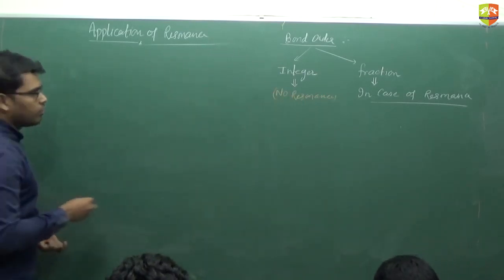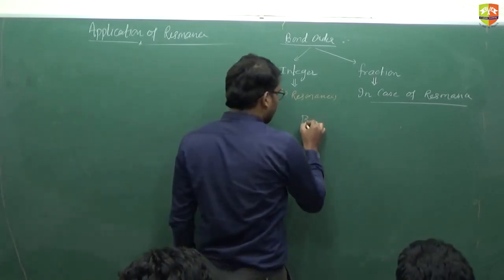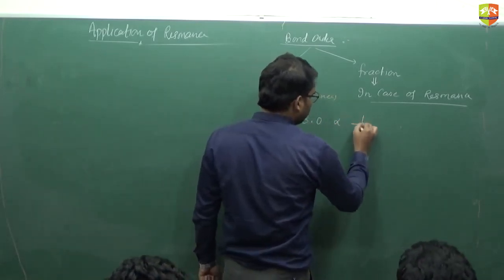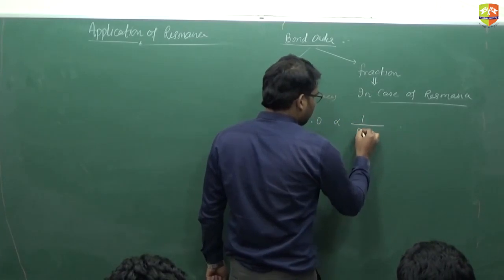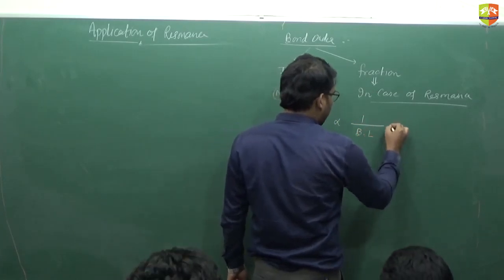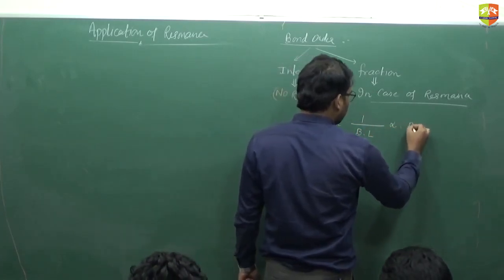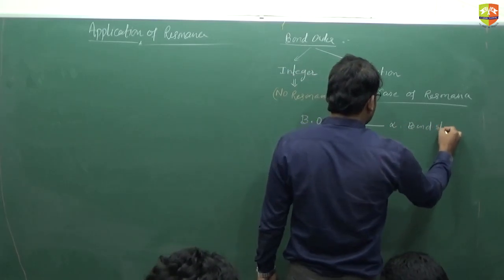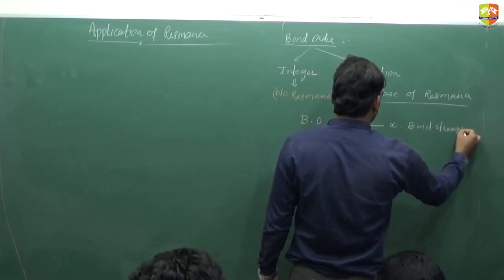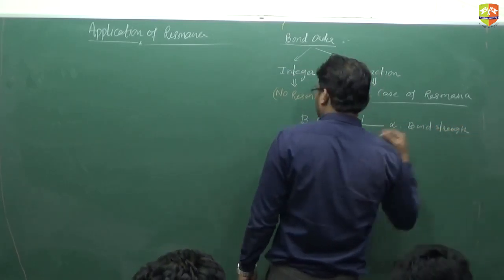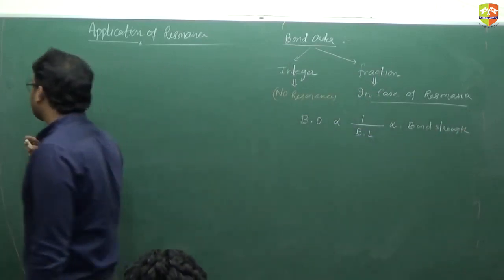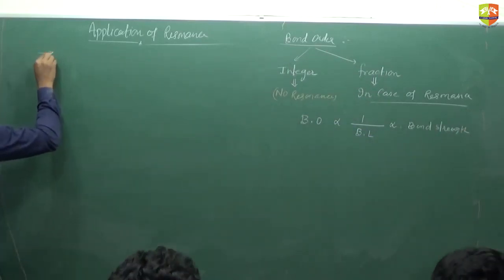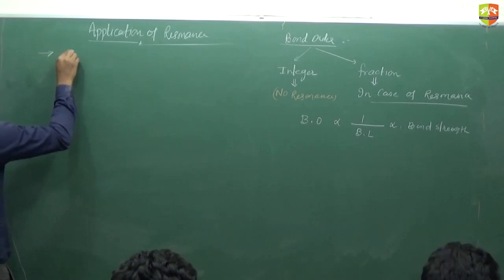For the calculation of bond order, bond order is inversely proportional to bond length and directly proportional to bond strength. All these comparisons we can do if we know the bond order. Now, the calculation of bond order in case of equal resonance.